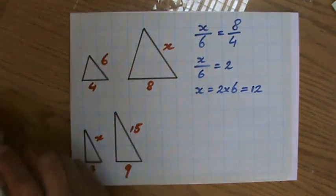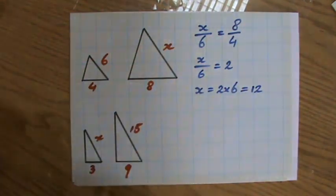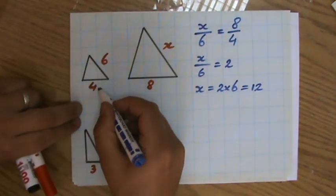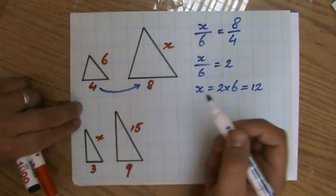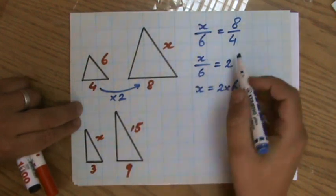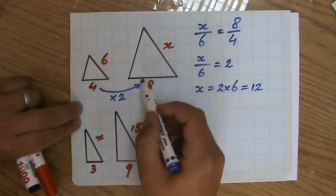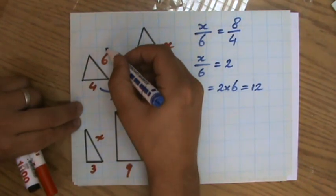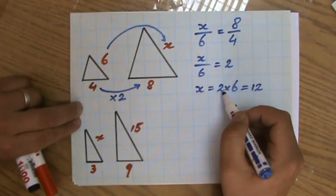Another approach could have been that you just said the scale factor, if I look at these two corresponding sides, is 2. Basically that's what I've done - 8 divided by 4, looking for the scale factor, 2. So 6 times the scale factor 2 is going to give me my new length, 12.